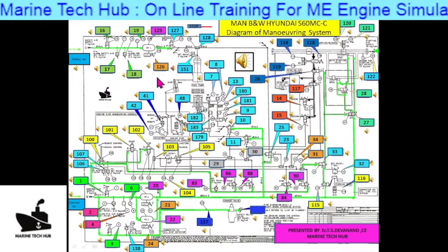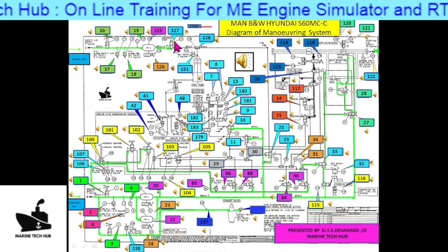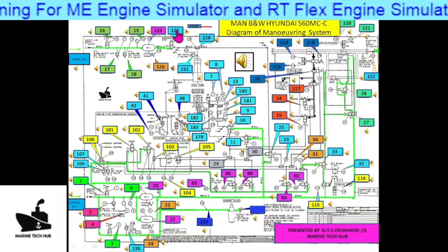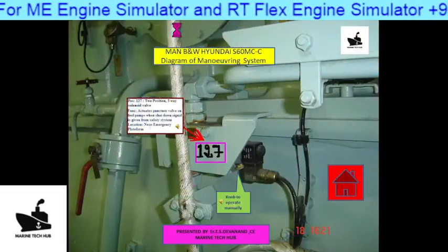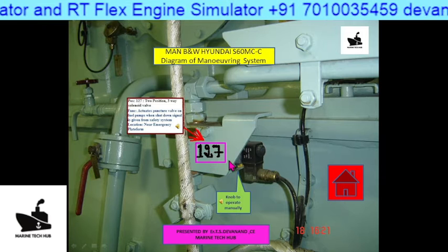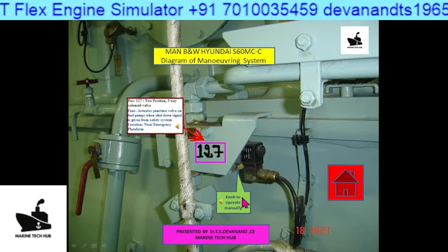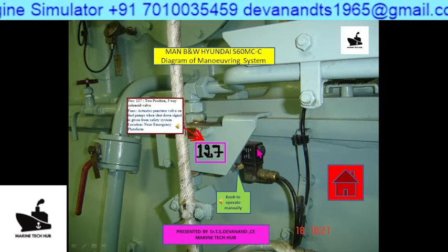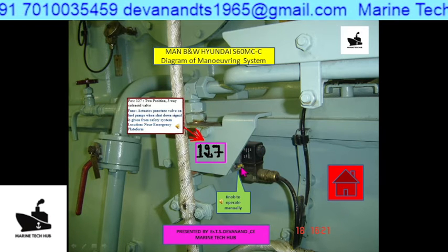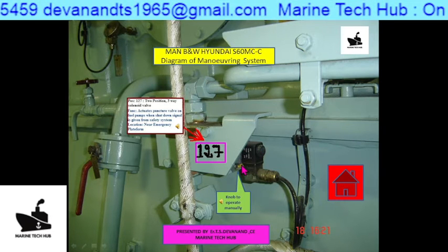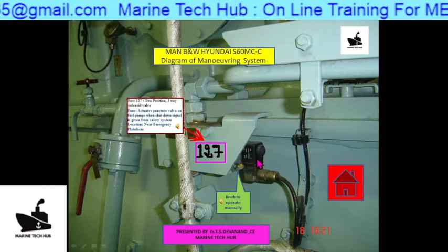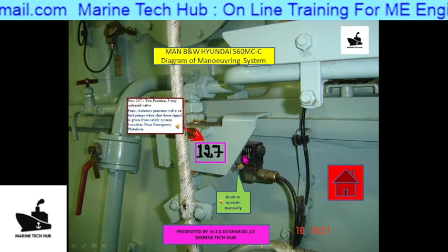Suppose you want to see 127 — this is the emergency valve. Whenever you press the emergency stop button, you can see this one: 127. It can be operated if the signal is not coming. You can operate it manually also. There is a yellow knob here — you can operate it manually. So this is very important. The location is shown here.